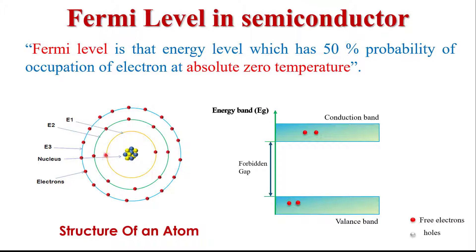This negatively charged electron always revolves around the positively charged nucleus because of the electrostatic force of attraction between them. Electrons revolve around the nucleus in different orbits. Each orbit has a different energy level — the electron orbit very close to the nucleus has low energy, whereas the orbit far away from the nucleus has higher energy.